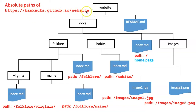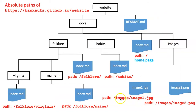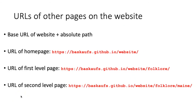For the folklore page, I'll put slash folklore and a slash, and for the habits page, slash habits slash. If I go a level further down into the Virginia and Maine folklore pages, then I build the URL out even further: slash folklore slash Virginia slash, etc. The path to the images is going to include the image folder and then the name of the image file itself. Here you can see how I build up the URLs of the pages at different levels — the home page, the first level page folklore, and the second level page, folklore Maine.